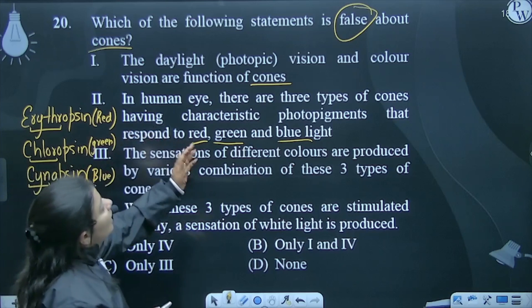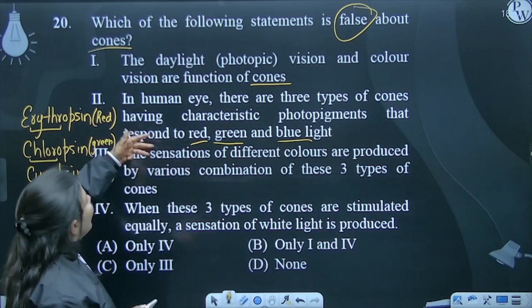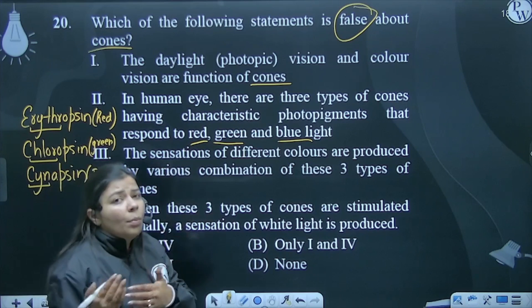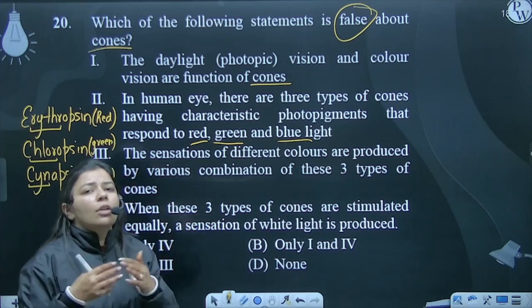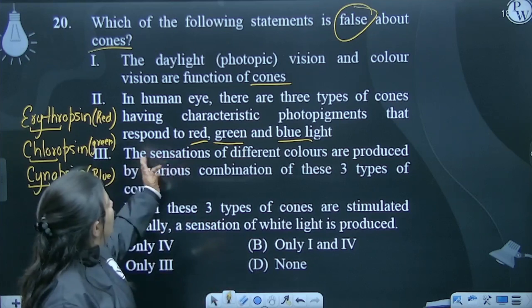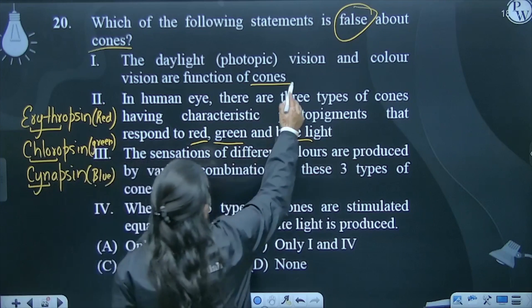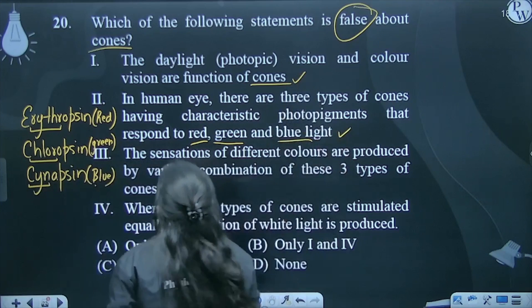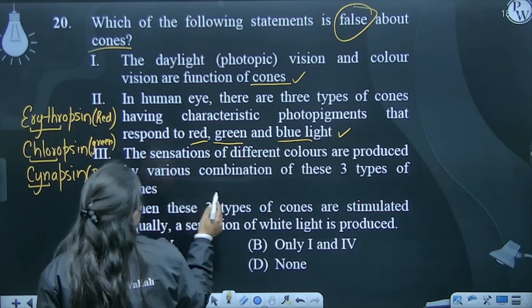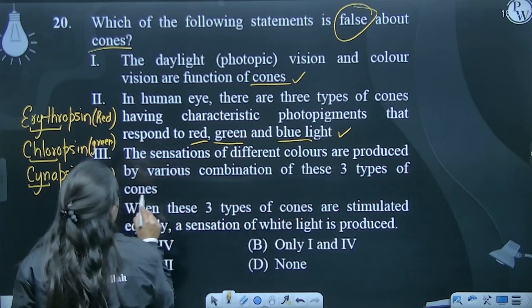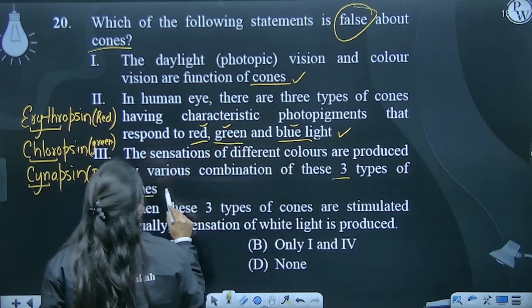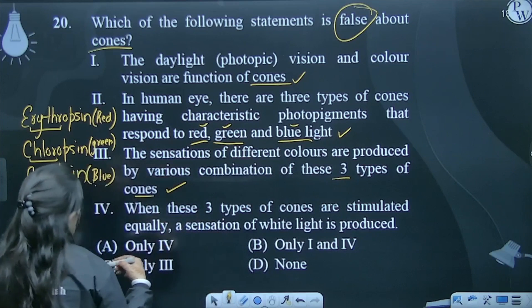So in human eye there are three types of cones which produce different types of colors. By the combination of these primary colors, n number of colors is produced. This statement is exactly right. The third statement says the sensation of different colors is produced by various combination of these three types of cones. Absolutely, three types of cones: 1, 2, and 3. So this statement is correct.